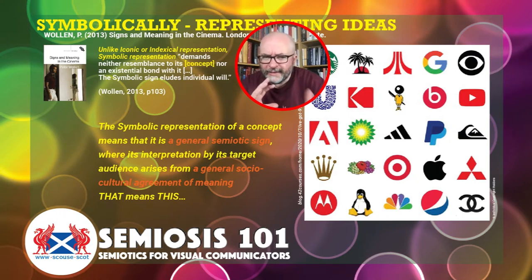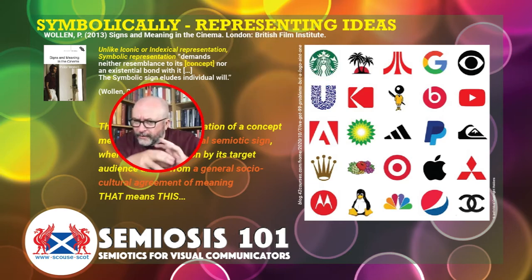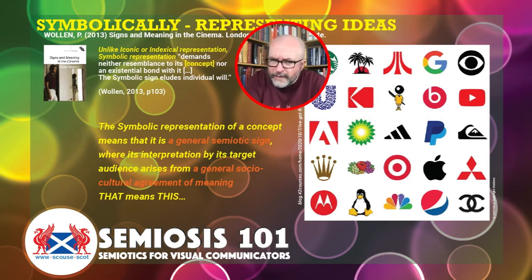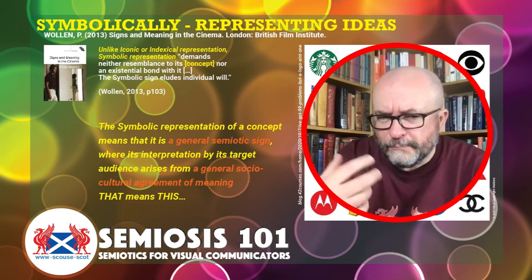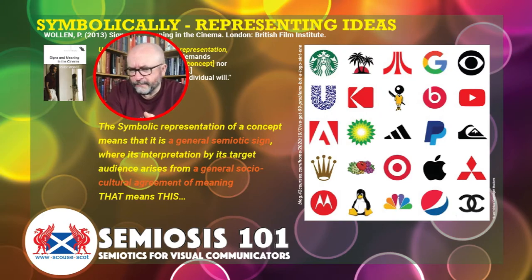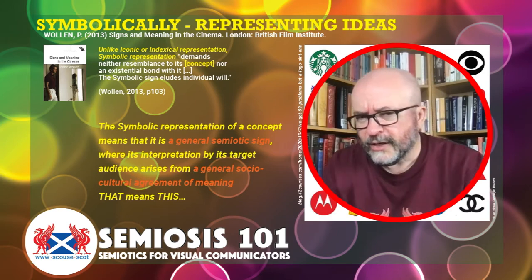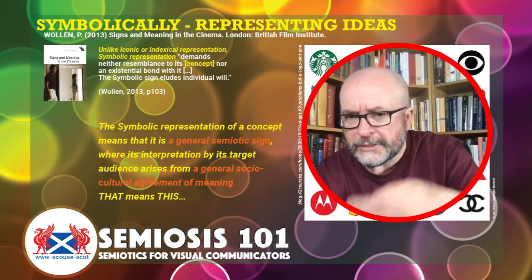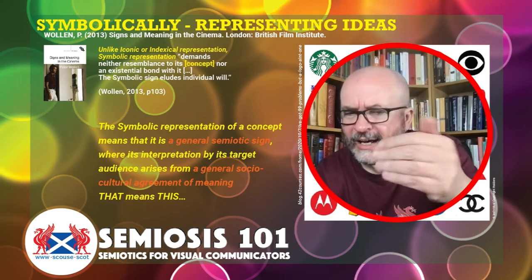Unlike iconic or indexical representation, symbolic representation demands neither resemblance to its concept — what we are obviously designing from the brief — nor an existential connection or bond with it. The symbolic sign eludes individual will. This idea of the symbolic sign eluding individual will means that symbolic representation of the concept we need to visually communicate is a general semiotic sign.